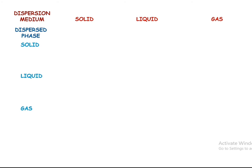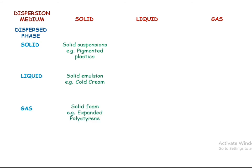The dispersion medium can be solid, liquid, or gas, and the same applies to the dispersed phase. When both dispersed phase and dispersion medium are solid, solid suspensions are formed — for example, pigmented plastics. When the dispersion medium is solid and the dispersed phase is liquid, solid emulsions are formed — for example, cold creams. When the dispersed phase is gas and the dispersion medium is solid, solid foams are formed — for example, expanded polystyrene.